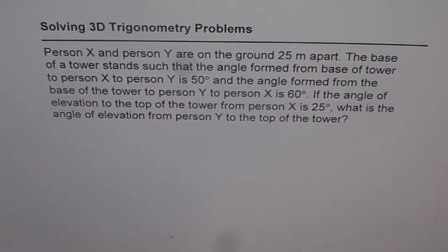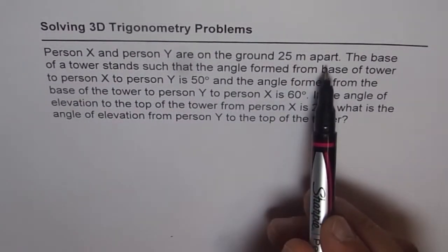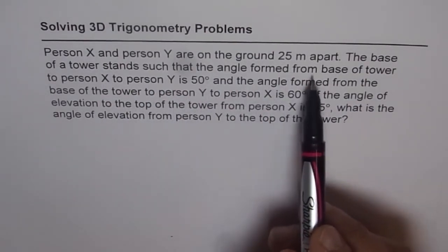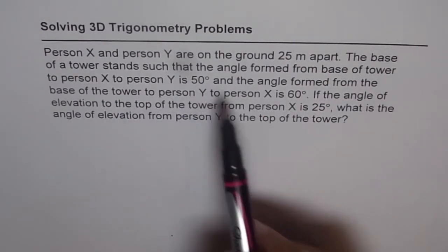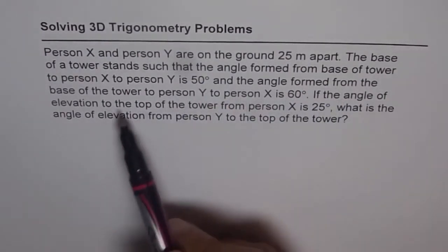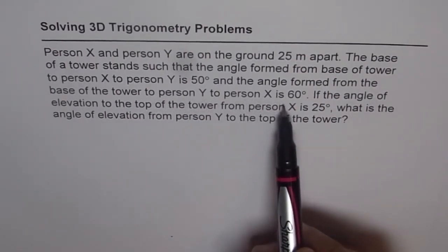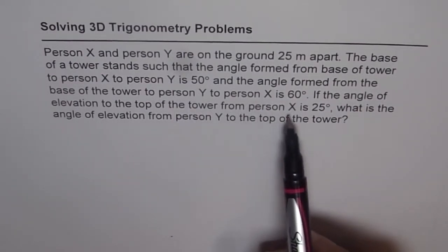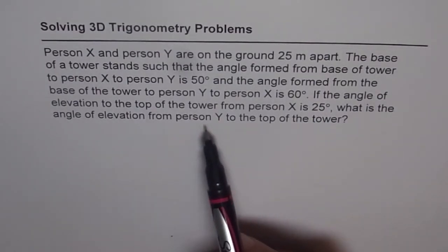Let us understand how to solve 3D problems with trigonometry. Person X and Y are on the ground 25 meters apart. The base of a tower stands such that the angle formed from base of the tower to person X to person Y is 50 degrees, and the angle formed from the base of the tower to person Y to person X is 60 degrees. If the angle of elevation to the top of the tower from person X is 25 degrees, what is the angle of elevation for person Y to the top of the tower?